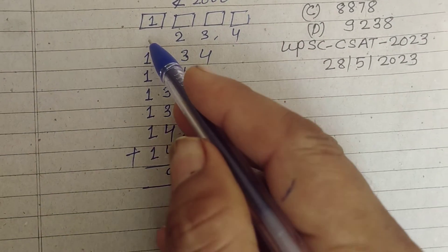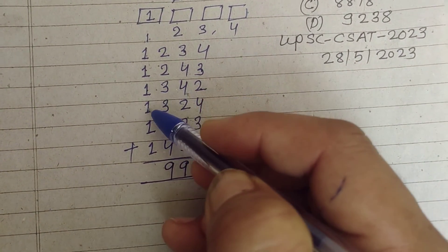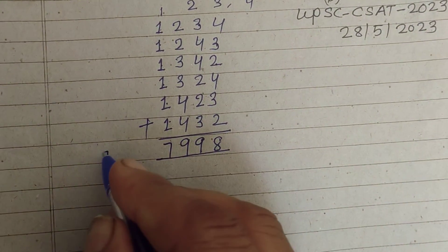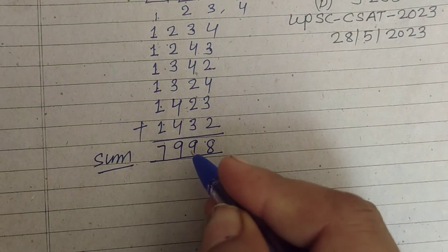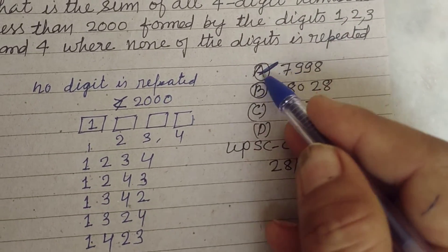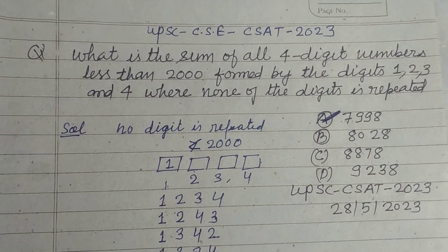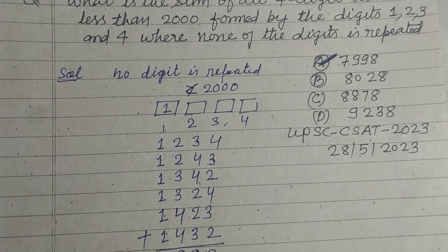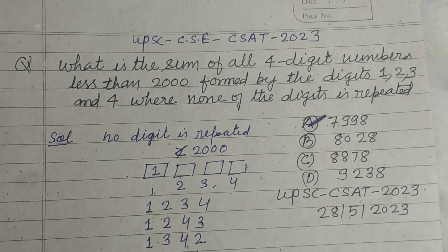Thousands column: 1+1+1+1+1+1 = 6 plus 1 carry = 7. So the sum of all the numbers is 7998, which is found in option A of this question. I hope you got it. Please like the video and subscribe to the channel. Thanks for watching.